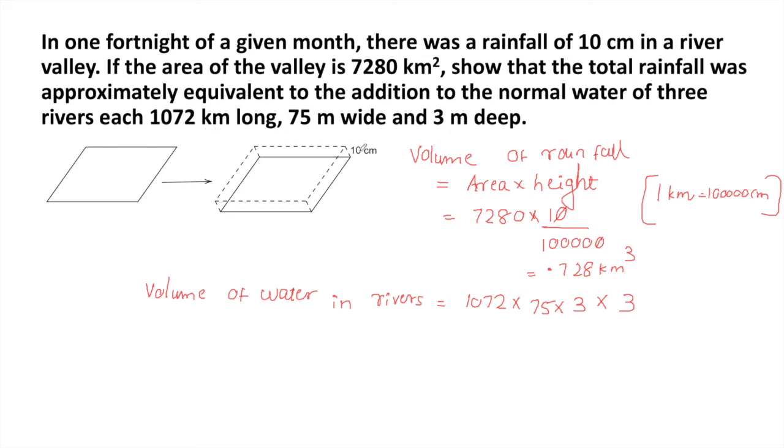Width and depth are given in meters, and length is in kilometers. So this meter here we are converting to kilometers. One kilometer is equal to 1000 meters. So here we can divide with 1000.